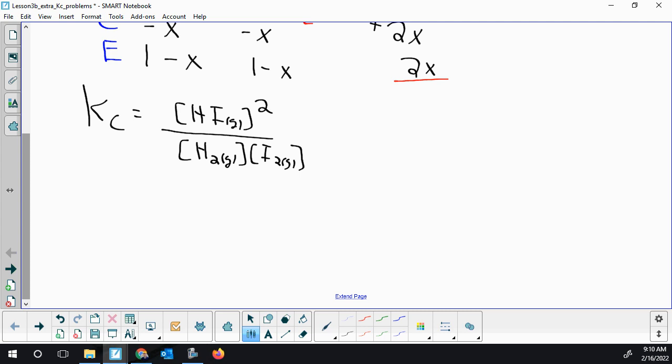So we can start plugging in. Kc is 25 - we don't know what temperature this is for, but whatever temperature this reaction is going at, it's 25. Concentration of hydrogen iodide we don't know exactly, but we know it's 2x.